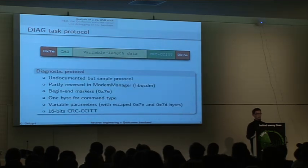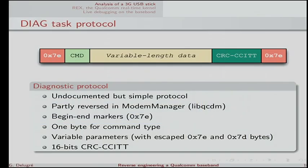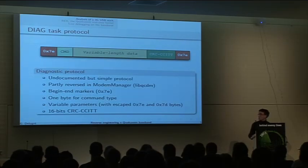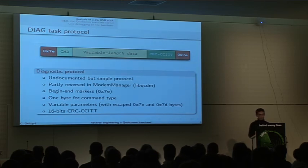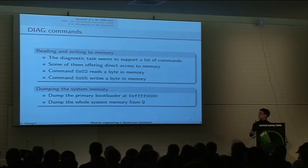It's a serial port so you can pass data into it, but there is a protocol. The protocol is fairly simple and not documented, since it's an engineering protocol from Qualcomm. It has been partly reversed — if you look in the NetworkManager source, there is a directory named libbqcdm where you can find part of the protocol. You have begin/end markers, one byte indicating the command, variable parameters depending on the command, and a CRC. There are hundreds of commands in this diagnostic mode.